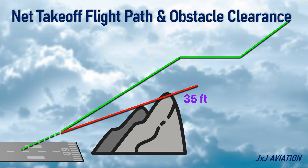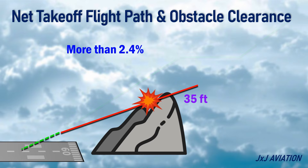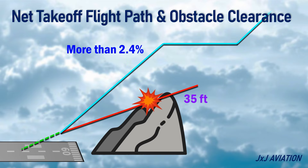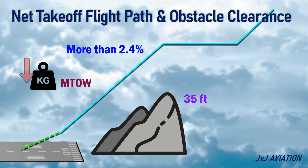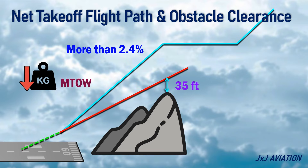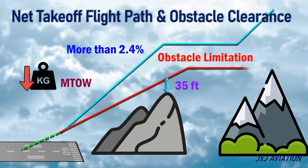If the aircraft is not able to clear the obstacle, the climb gradient has to be increased to more than 2.4%. This means the maximum takeoff weight, or MTOW, may need to be reduced to meet this new gradient requirement. This is known as obstacle limitation. Similarly, the net takeoff flight path must clear obstacles by at least 35 feet in all the takeoff segments.